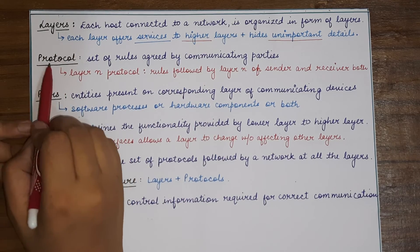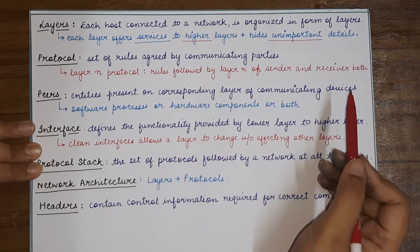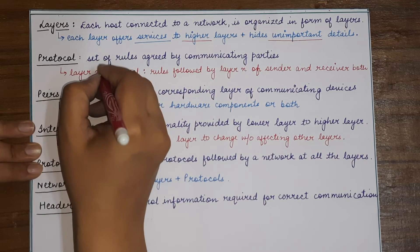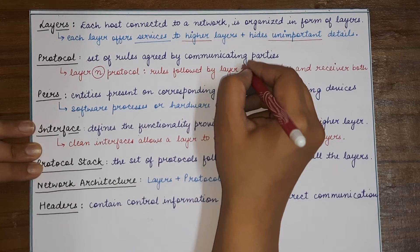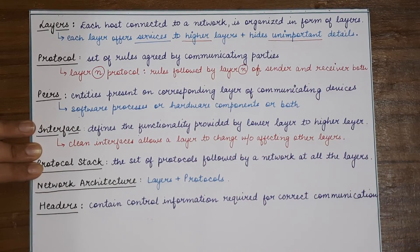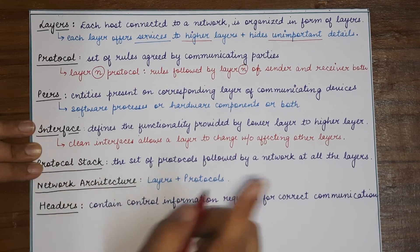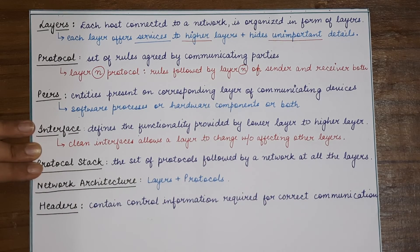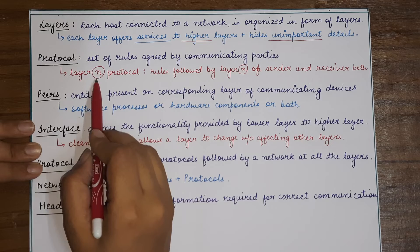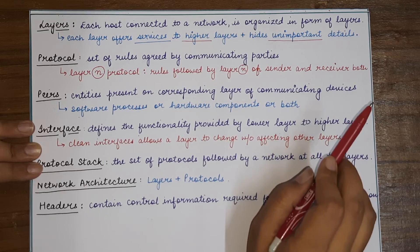A protocol is the set of rules agreed upon by communicating parties for performing communication. When we say a layer N protocol, we mean the set of rules followed by layer N of both sender and receiver. At each layer, the corresponding layers at each communicating end follow the same protocol, because you need the same set of rules on both sides to make communication possible.